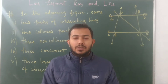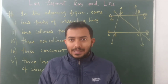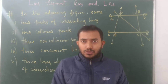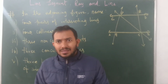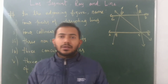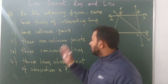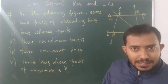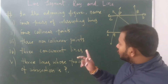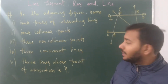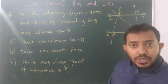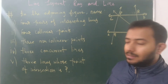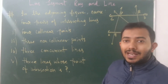Welcome back students. In the line segment grade and line chapter, we have one problem. The first part asks to name four pairs of intersecting lines. The second is four collinear points. The third is three non-collinear points. The fourth is three concurrent lines. And the last one is three lines passing through point P.